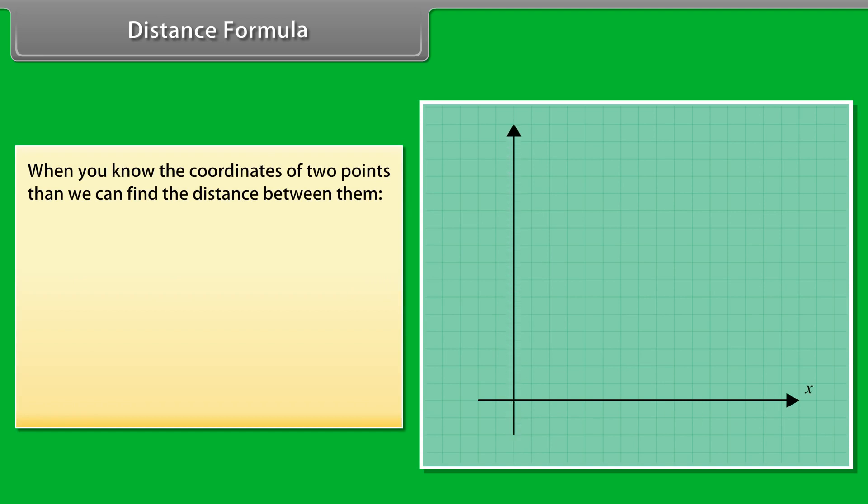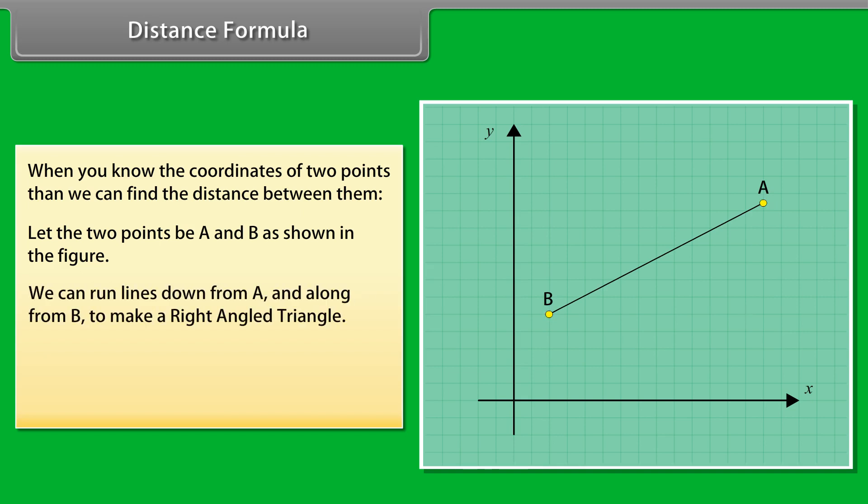Distance formula. When you know the coordinates of two points, then we can find the distance between them. Let the two points be A and B as shown in the figure. We can run lines down from A and along from B to make a right-angled triangle. Now using Pythagoras theorem, we get A square plus B square is equal to C square.